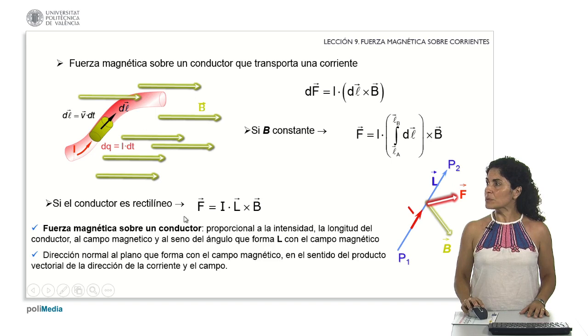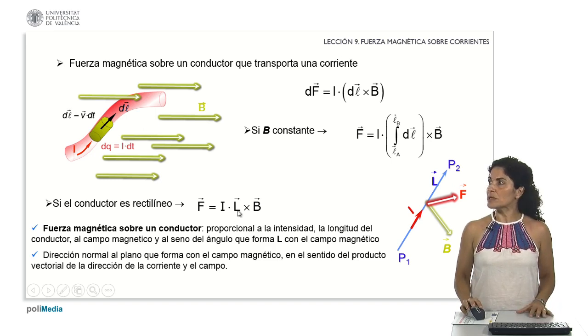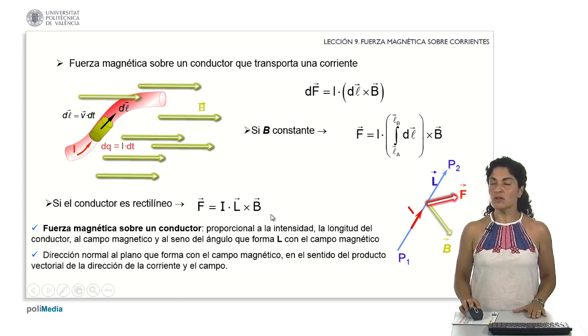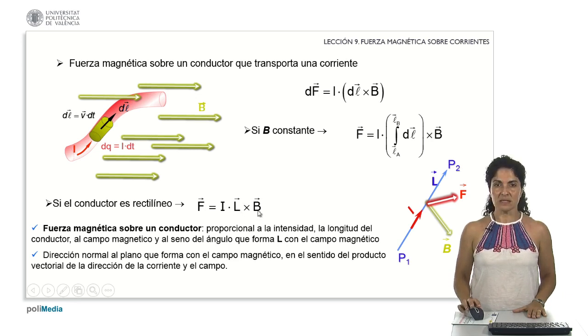I have to bear in mind that the module of that interaction will be defined by the module of the length vectors, magnetic field, and also by the value of the current that is circulating, and that what would be the sense of that magnetic interaction will be defined by a vector perpendicular to the plane, defined at the same time by the vectors, the length vector, and the magnetic field vector.